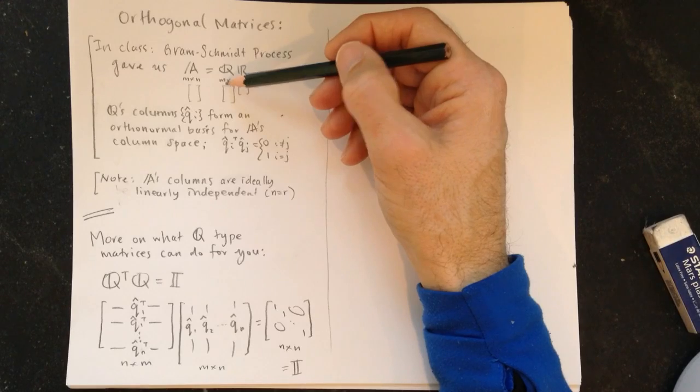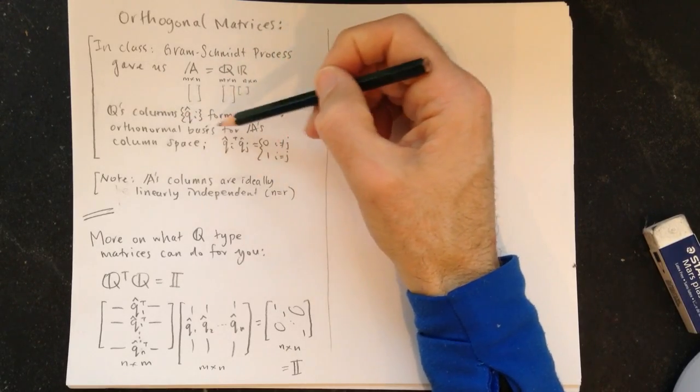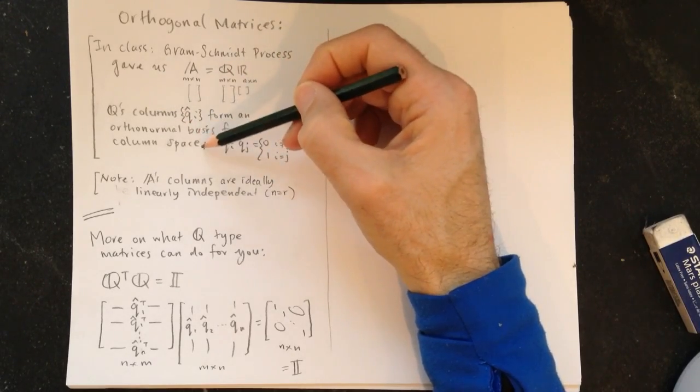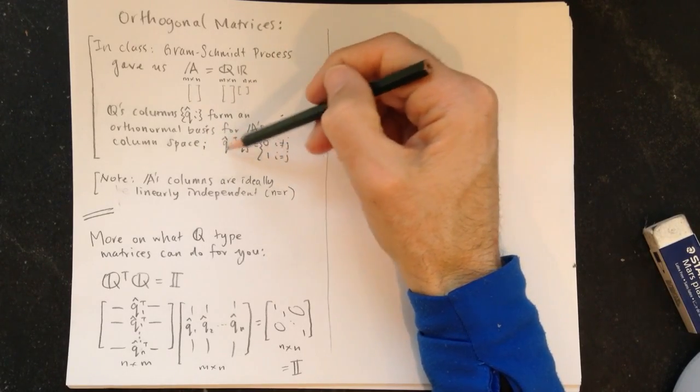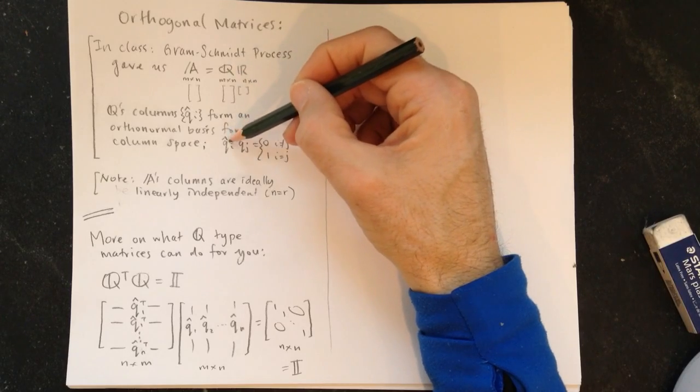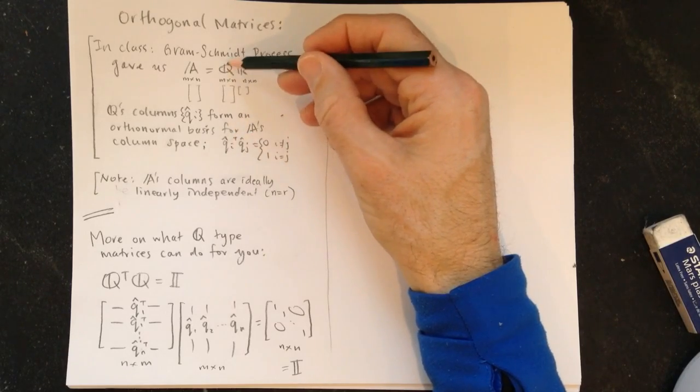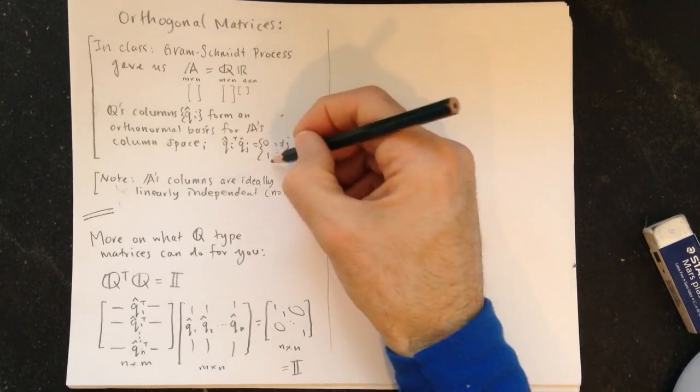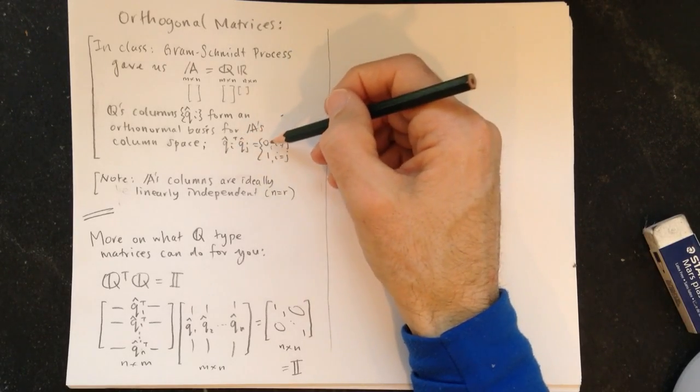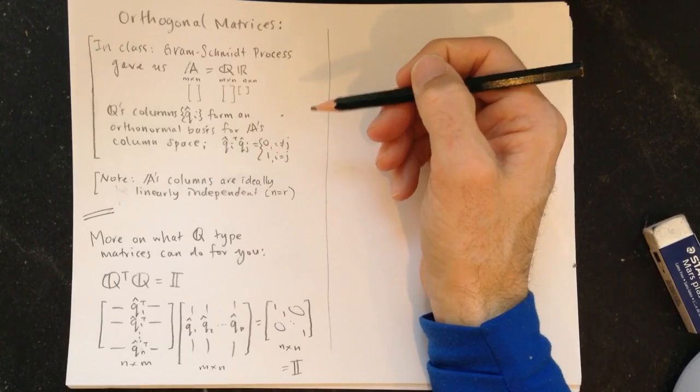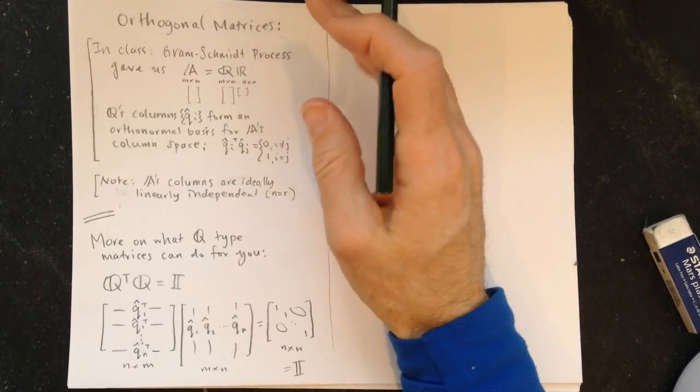So they form an orthonormal basis for A's column space, and we can write down the property of orthonormality here. So the dot product between any two columns of Q is 1, if I equals J, for the same column, and it's 0 otherwise. So they form a nice orthonormal basis.